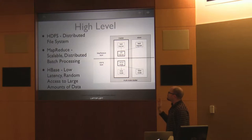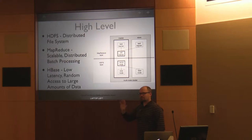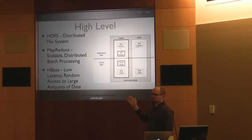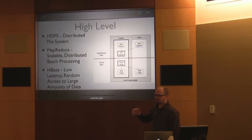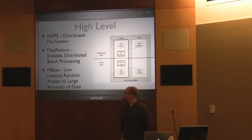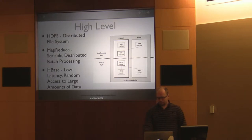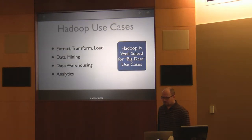HBase came a little bit later. MapReduce is great for batch jobs but did very poorly for millisecond-level random data access. That's where HBase comes in — it provides low-latency random access to large amounts of data.